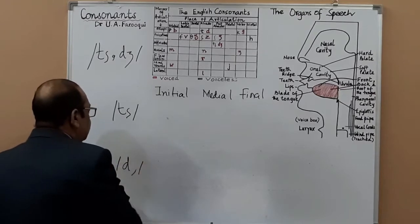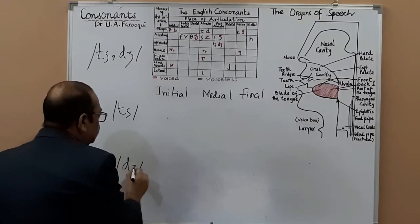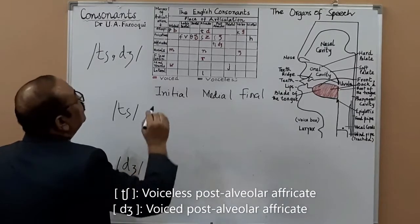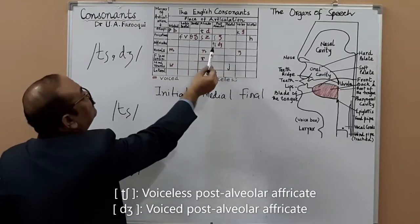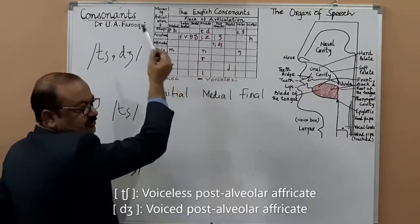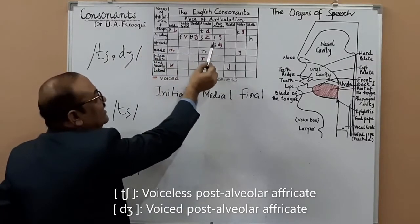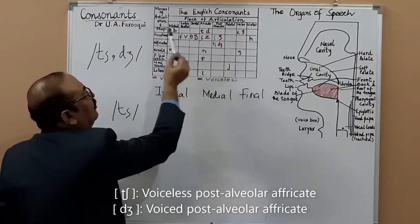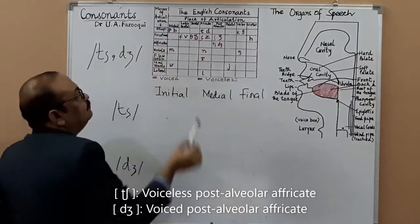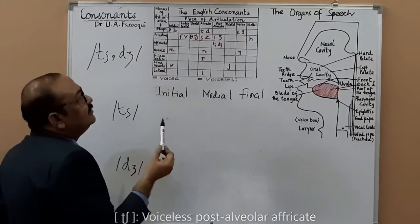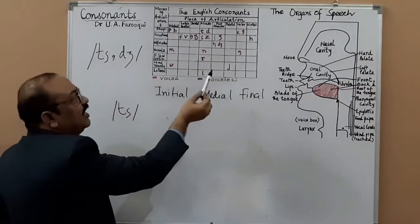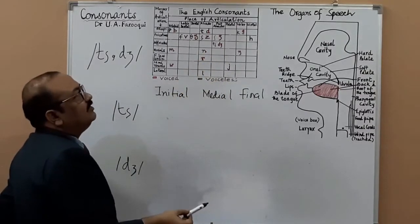CH is a voiceless post-alveolar affricate, and J is a voiced post-alveolar affricate. Post-alveolar is the position situated in the vocal tract just behind the alveolar ridge.